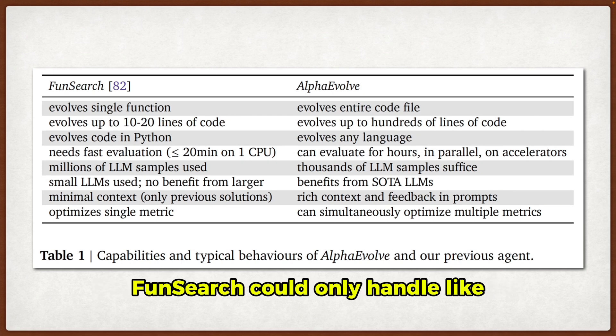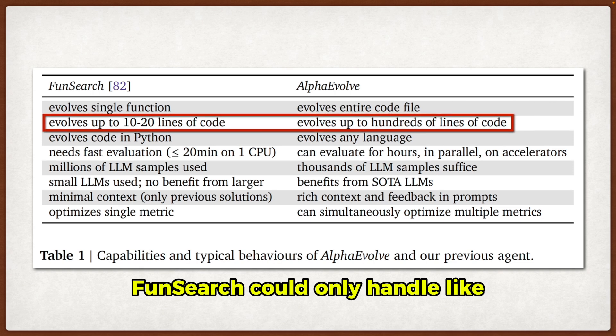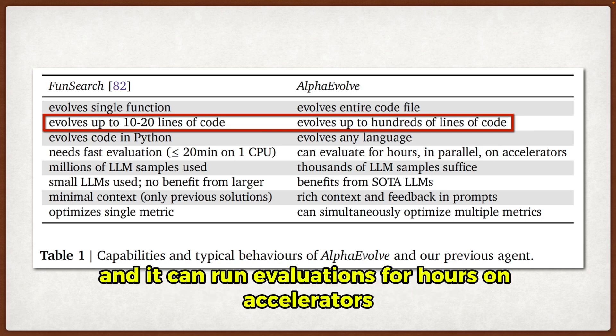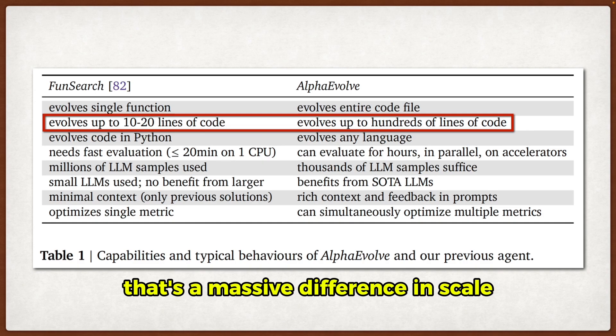Look at this comparison. FunSearch could only handle like 10 to 20 lines of Python code. AlphaEvolve? Hundreds of lines, any programming language, and it can run evaluations for hours on accelerators. That's a massive difference in scale.